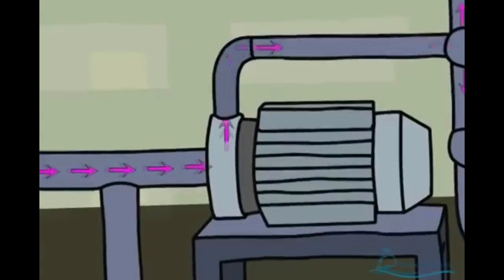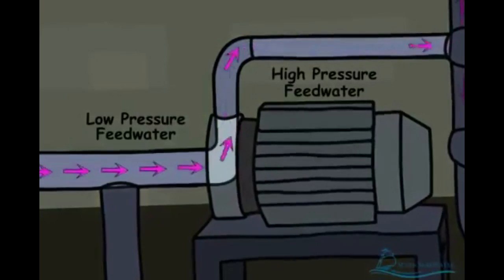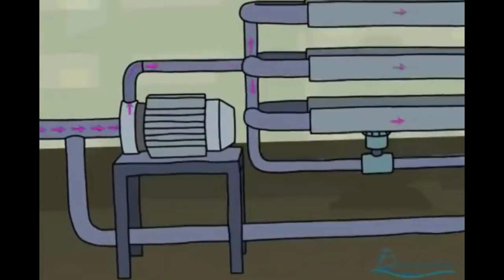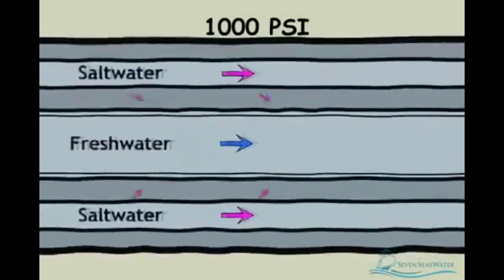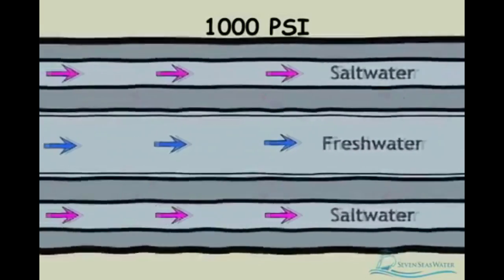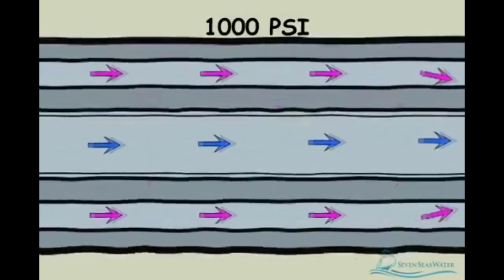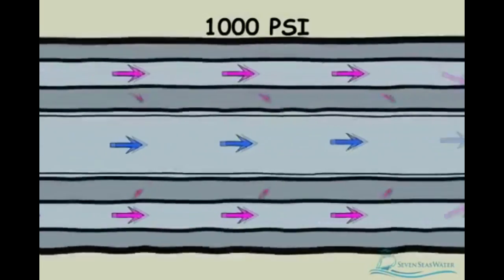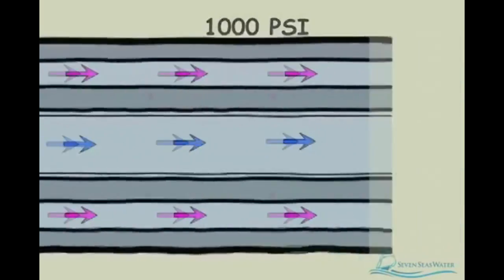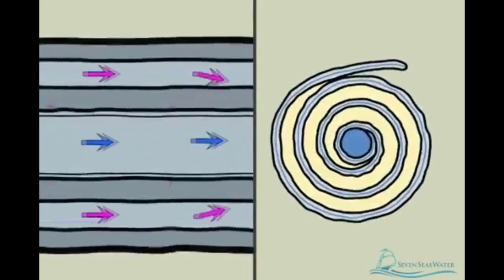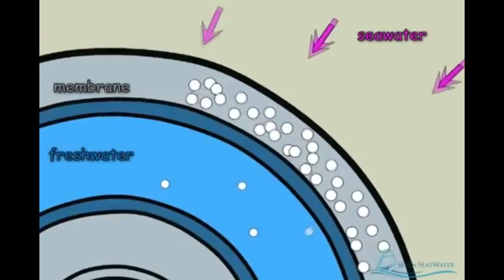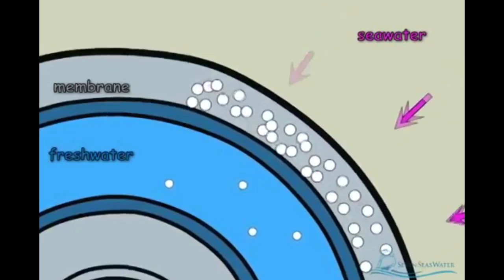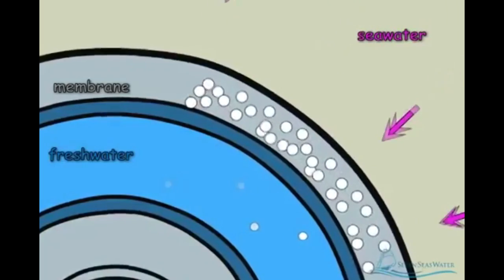High pressure pumps increase the pressure of the seawater up to 1,000 psi. The pressure needs to be sufficiently high to overcome the naturally occurring osmotic pressure and force water from the saltwater side through the reverse osmosis membranes to the freshwater side. The salt particles in the seawater are rejected from passing through the membrane to the freshwater side and remain behind on the concentrated saltwater side.